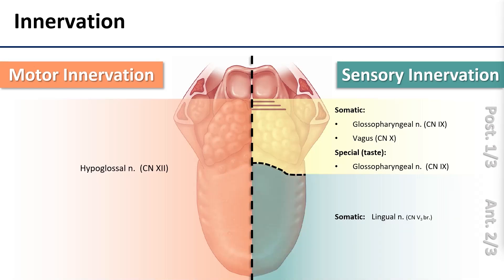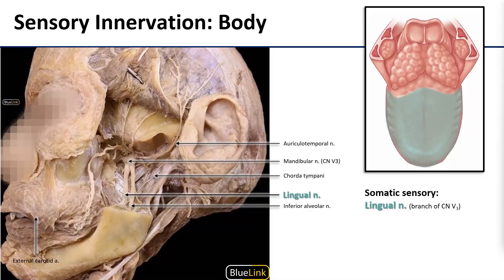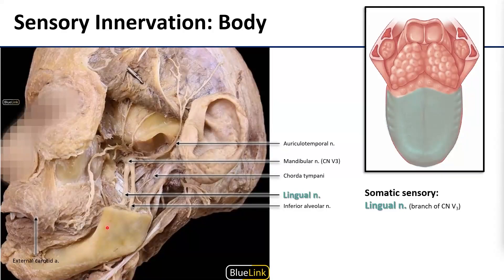For the anterior two-thirds of the tongue, somatic sensory is coming via the lingual nerve, which is a branch of V3. Here is V3 in the infratemporal fossa, and here is its posterior division. The lingual nerve branches from the posterior division and heads inferiorly and anteriorly into the oral cavity by going deep to the mandibular ramus, then travels down into the sublingual space where it approaches the tongue from inferior.